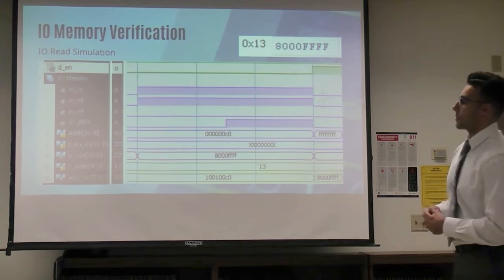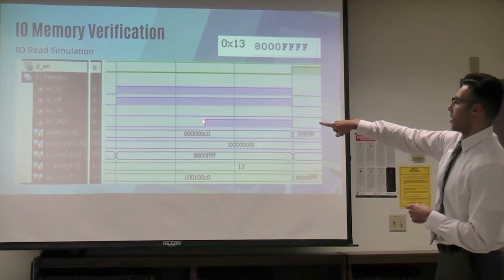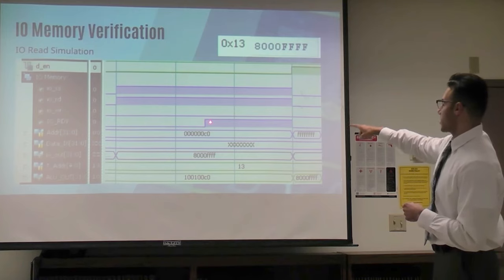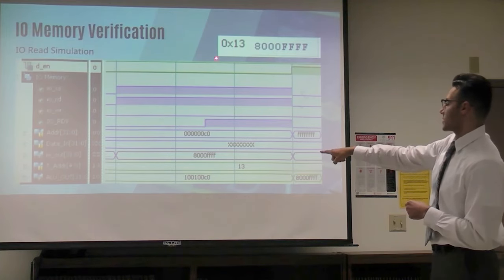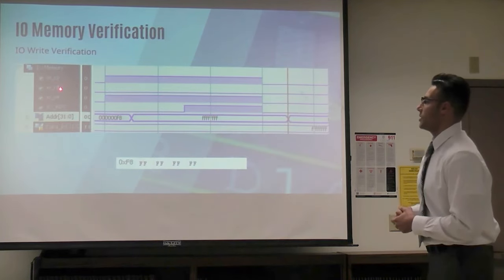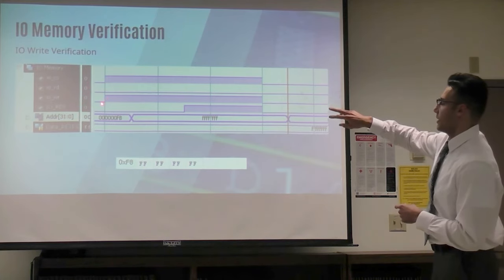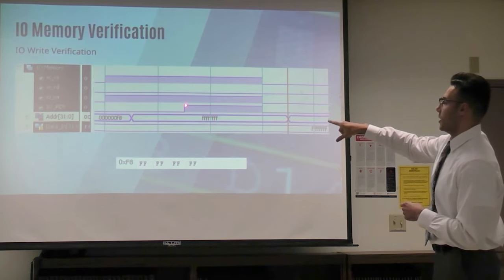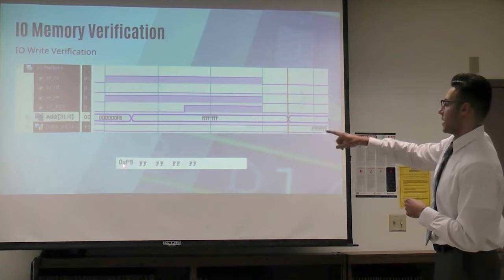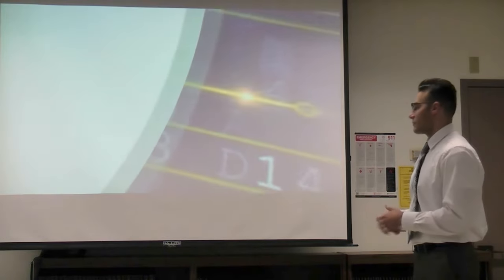Here's the simulation for IO memory ready. The chip select and read enable are asserted, and the IO-ready signal is asserted after some time. Once it's deasserted, we write the data back to destination register 13. For the write verification, once the chip select and write select are asserted, IO-ready is asserted after some time, then deasserted. We're showing that memory location F8 is getting FFFF, which is the correct data.